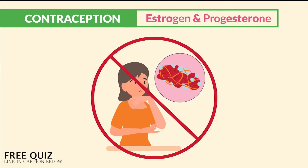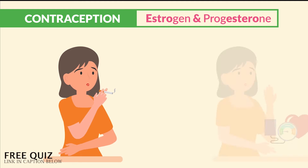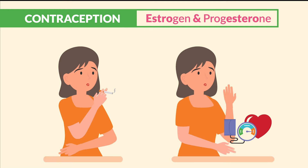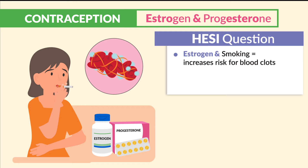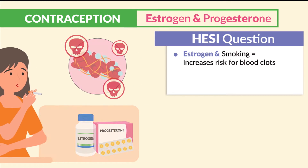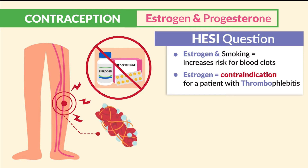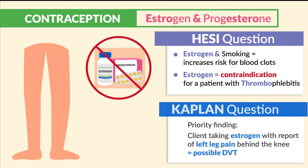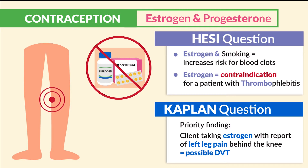We avoid giving estrogen to those with a high risk for clots, like those who smoke or have hypertension. Estrogen and smoking means an increased risk for blood clots — so if you smoke and take birth control, watch out for blood clot city. Now estrogen is contraindicated for a patient with thrombophlebitis — that blood clot causing vein inflammation and irritation.